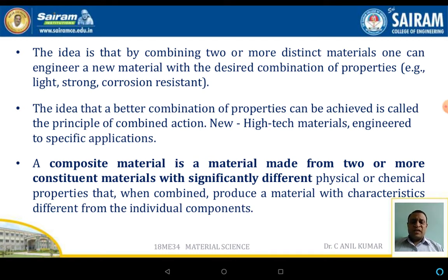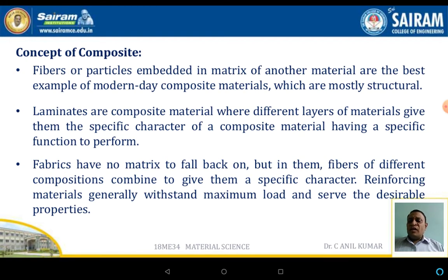Composite materials are materials made up of two or more constituent materials with significantly different physical and chemical properties that, when combined, produce a single material which is different from the individual components. The concept of the composite: fibers or particles embedded in the matrix of another material are the best examples of modern-day composites, which are mostly structural materials.